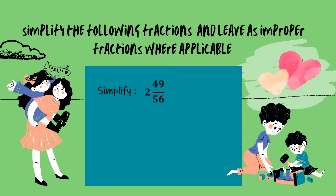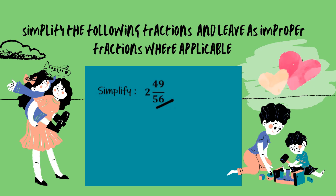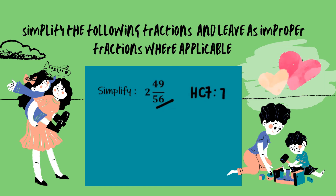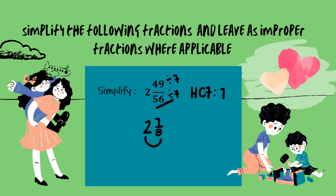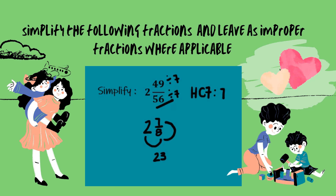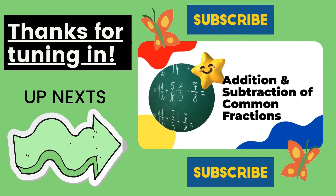To simplify 2 and 49 over 56, I am first going to simplify the fractional part and then convert that mixed fraction into an improper fraction. The highest common factor of 49 and 56 is 7. So 49 divided by 7 and 56 divided by 7 leaves us with 2 and 7 over 8. From here we convert: 2 times 8 is 16, and 16 plus 7 is 23. Therefore our simplified fraction is 23 over 8.